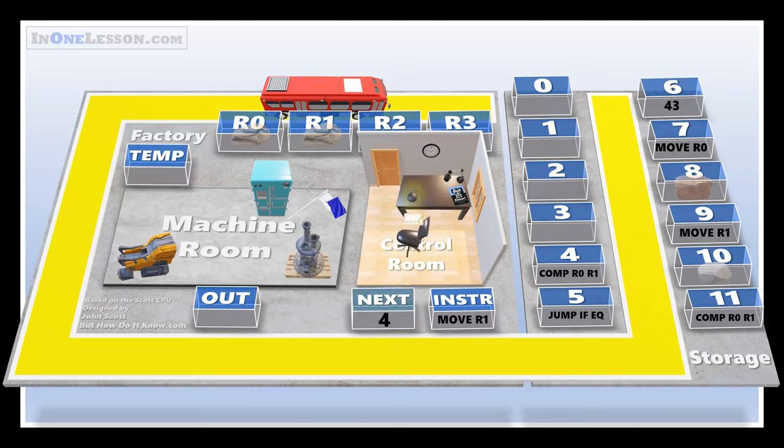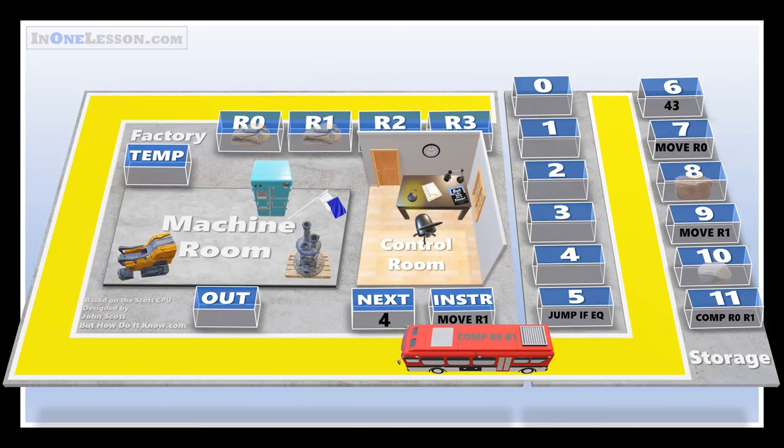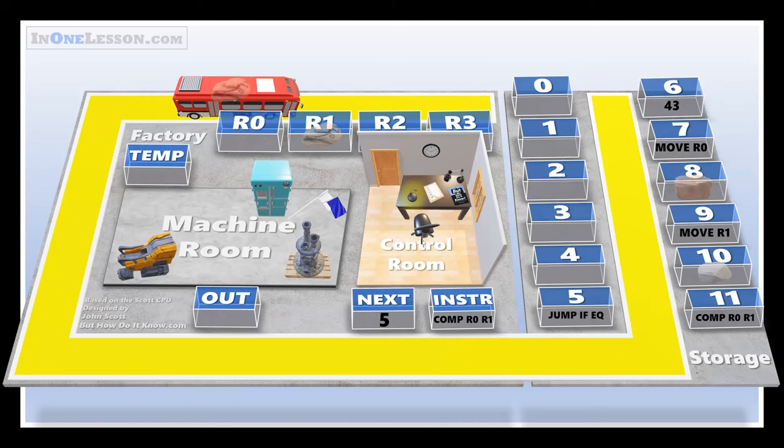The third instruction sends the raw materials that are now on the factory floor to the machine room. To execute this instruction, the bus moves the raw material in the first container to the temp container. It then grabs the other raw material and parks next to the machine room.